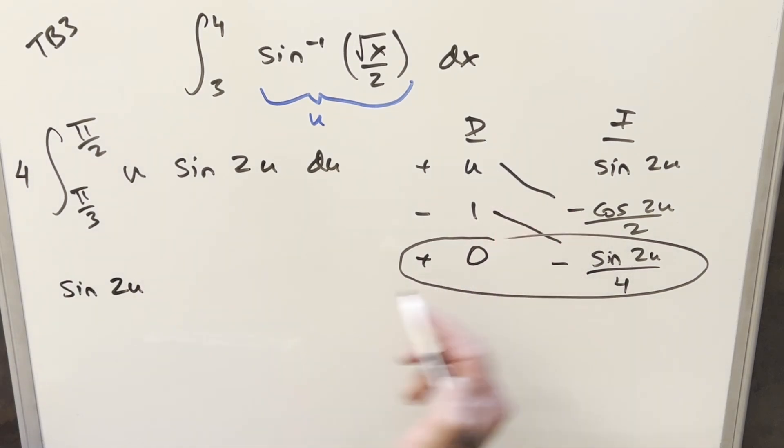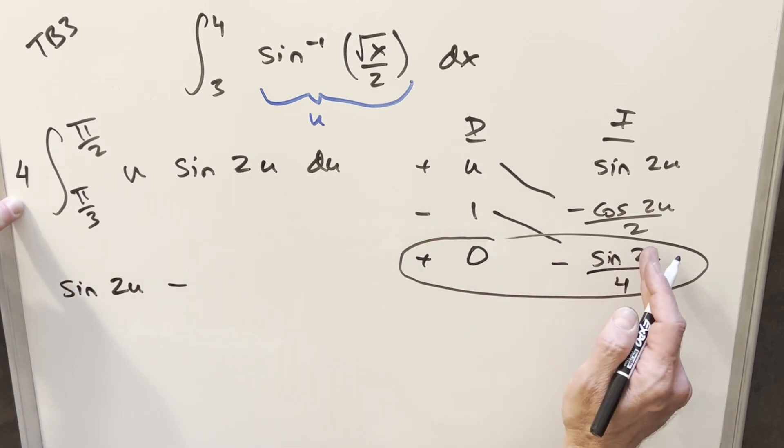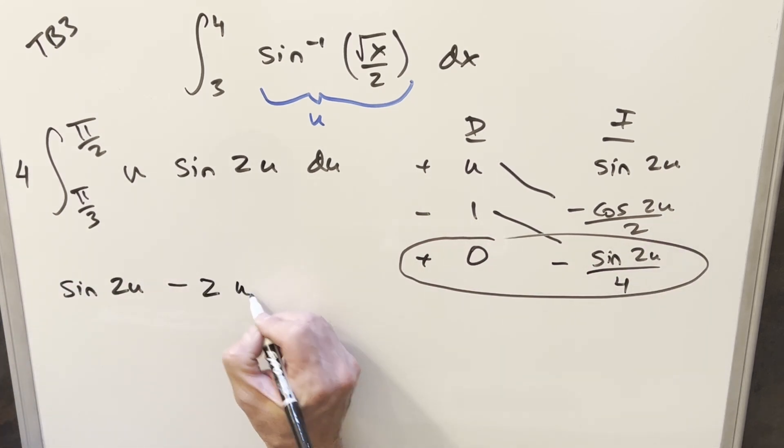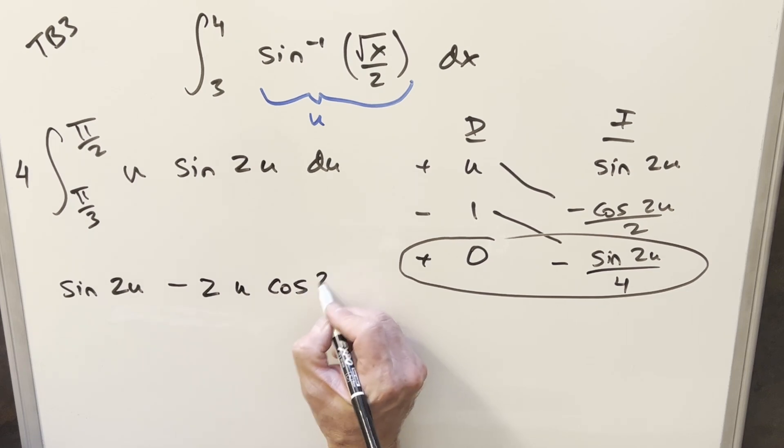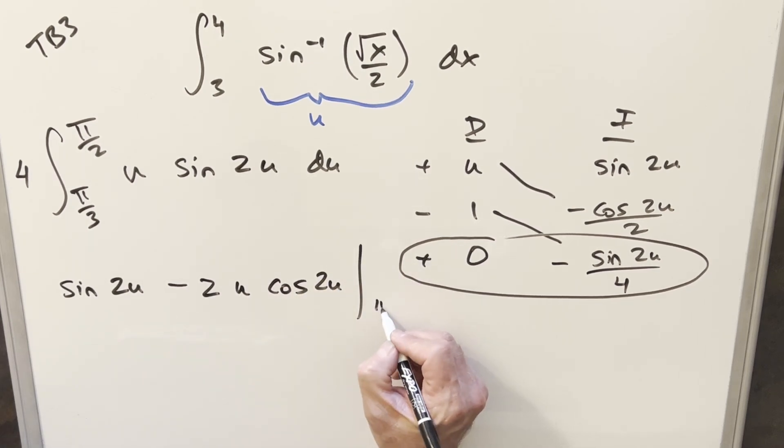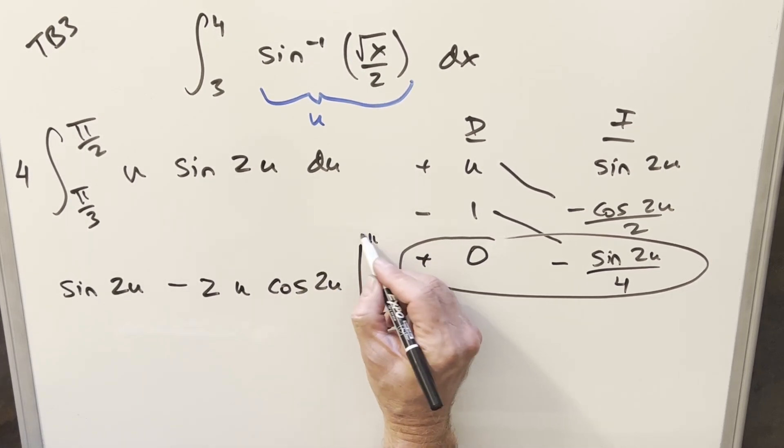The second part, we're going to have a minus. I'm going to distribute on the four to the one half here, the four over two. That's just going to be a two in front. U cosine two u. And we're just evaluating from pi over three to pi over two.